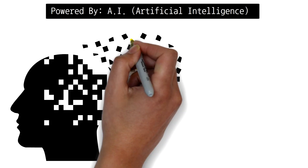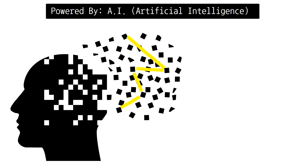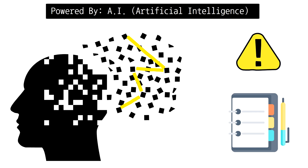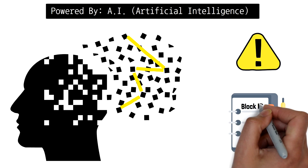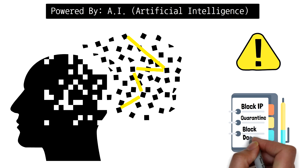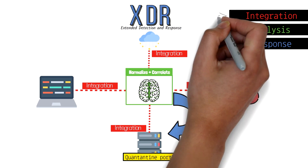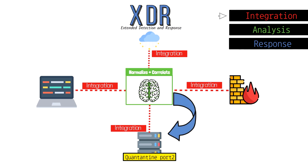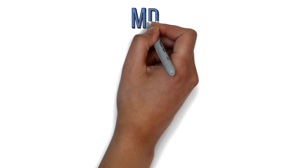When the AI engine determines that an investigation is deemed to be a security risk, the response phase can automatically remediate the issue by responding to the relevant security devices depending on the playbook you have configured. For example, this could include blocking an IP at your firewall, quarantining a user at the switch port, or blocking a domain on your mail server. Ultimately, XDR is about an AI system that can take in telemetry data, make a decision based on supervised learning, and then respond to the relevant device to mitigate the risk on your network.